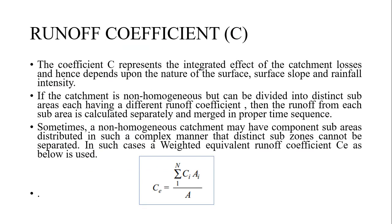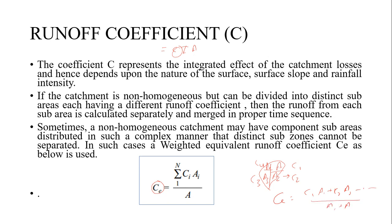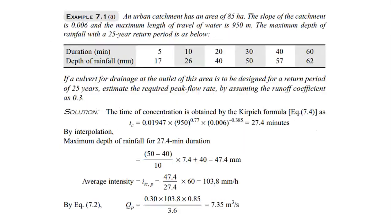For an average runoff coefficient over a basin with areas A1, A2, A3, A4 each having runoff coefficients C1, C2, C3, C4, the weighted equivalent runoff coefficient is: C_avg = (C1·A1 + C2·A2 + C3·A3 + C4·A4) / (A1 + A2 + A3 + A4).